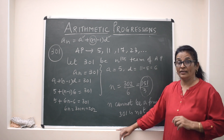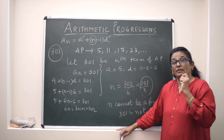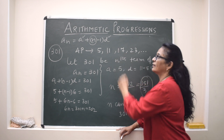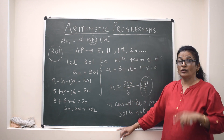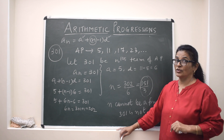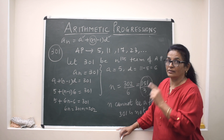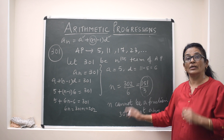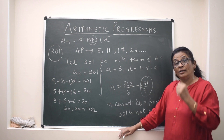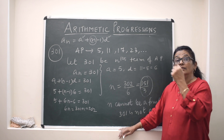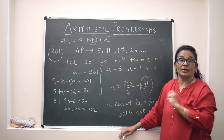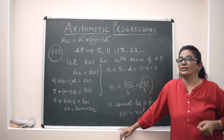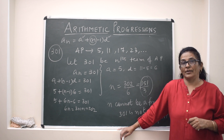So when an AP is given and they ask whether a particular number falls in it, the condition is: assume it is the nth term, and if N comes out as a positive integer then it belongs to the AP — otherwise it does not. In this case, 301 is not a member of this AP.